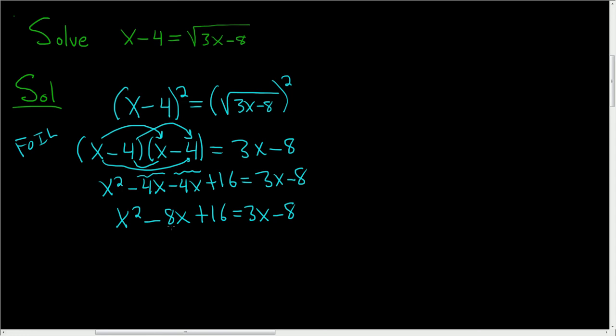This is a quadratic equation, so let's go ahead and set it equal to 0. So we'll subtract 3x from both sides, and we'll add 8 to both sides.